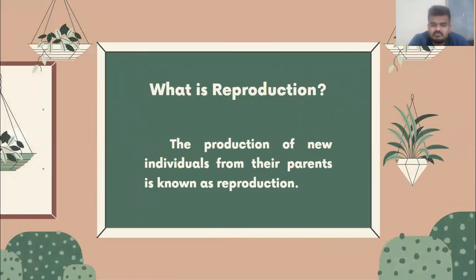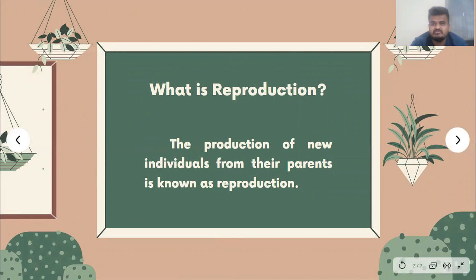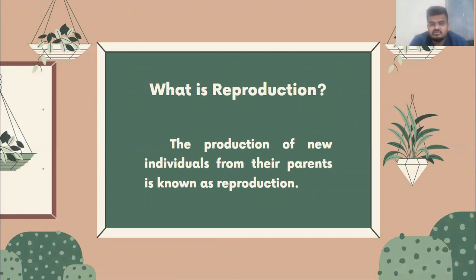Can anyone remember what reproduction is? The production of new individuals from their parents is simply known as reproduction. You might have observed that humans are having babies for the next generation — your parents are the result of reproduction by your grandparents. This is the cycle.